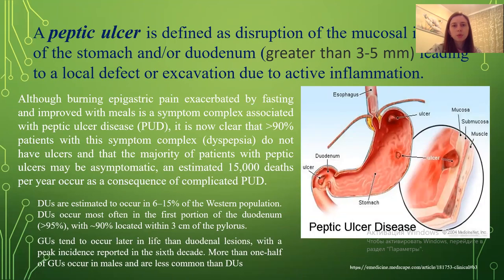A Peptic Ulcer is defined as a disruption of the mucosal integrity of the stomach and duodenum leading to a local defect due to active inflammation. Although burning epigastric pain exacerbated by fasting and improved with meals is the symptom complex associated with Peptic Ulcer disease, it is now clear that more than 90% of patients with dyspepsia do not have ulcers, and that the majority of patients with Peptic Ulcer may be asymptomatic. An estimated 15,000 deaths per year occur as a consequence of complicated Peptic Ulcer disease.